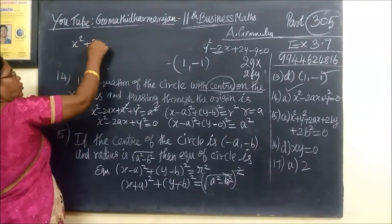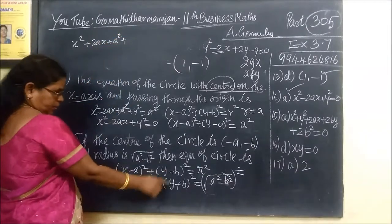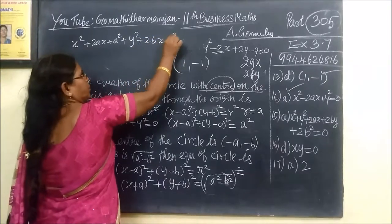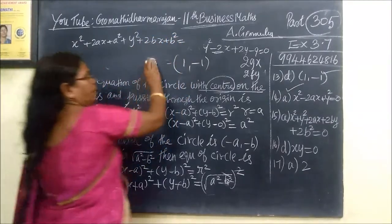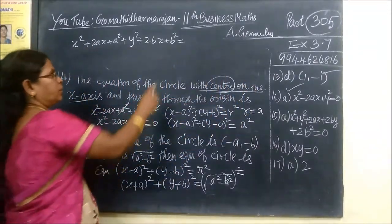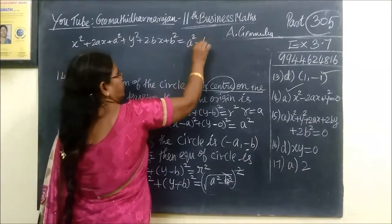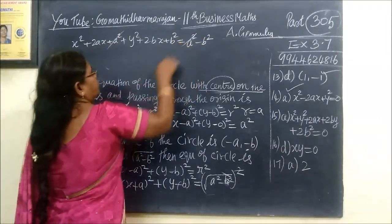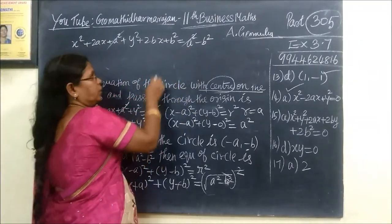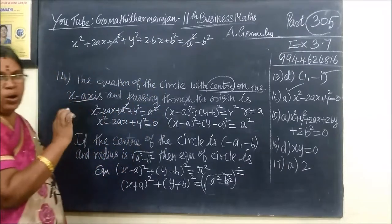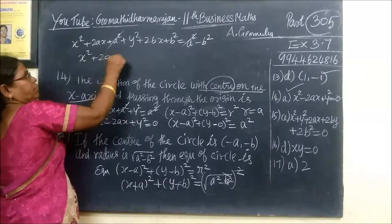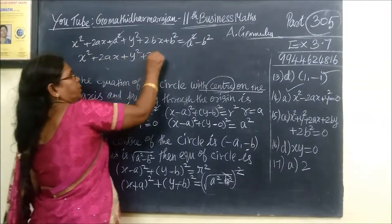Expanding: x² + 2as + a² from the first term, and y² + 2bx + b² from the second term. The a² and b² terms cancel with r² = a² + b², leaving x² + 2as + y² + 2bs equal to zero.